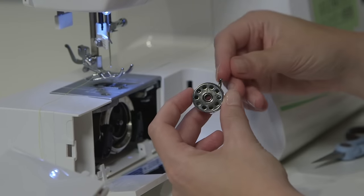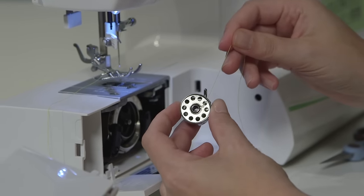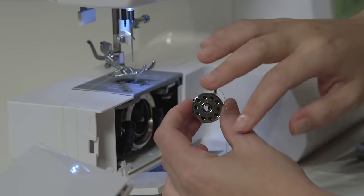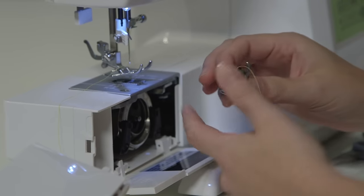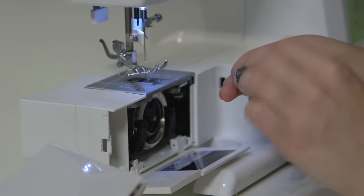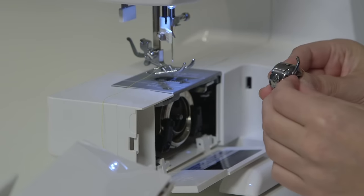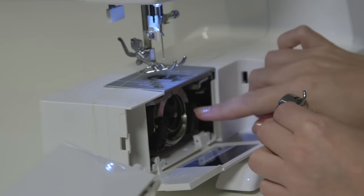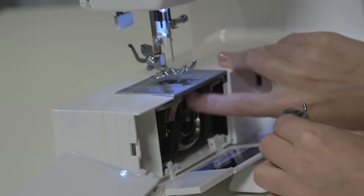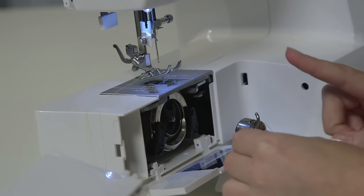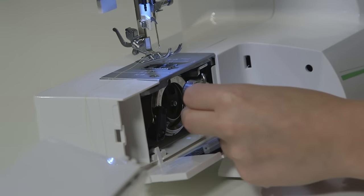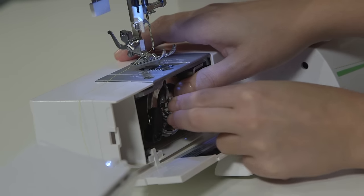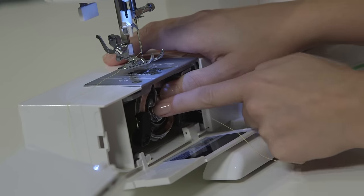Once you have the bobbin in, you can double check that you put it in the right way by pulling on the thread, and it should turn clockwise. Once our bobbin is in the bobbin case, we can just let go of the thread tail. We're going to turn it back around and grab onto that hinged latch to hold it. The bobbin case is going to go in here, in the bobbin holder. There's a notch right at 12 o'clock that's going to line up with that finger on the bobbin case. So you want to hold the bobbin case so that finger is pointed straight up, and we're going to slide it in until it seats all the way in there, and then you can let go of the latch.